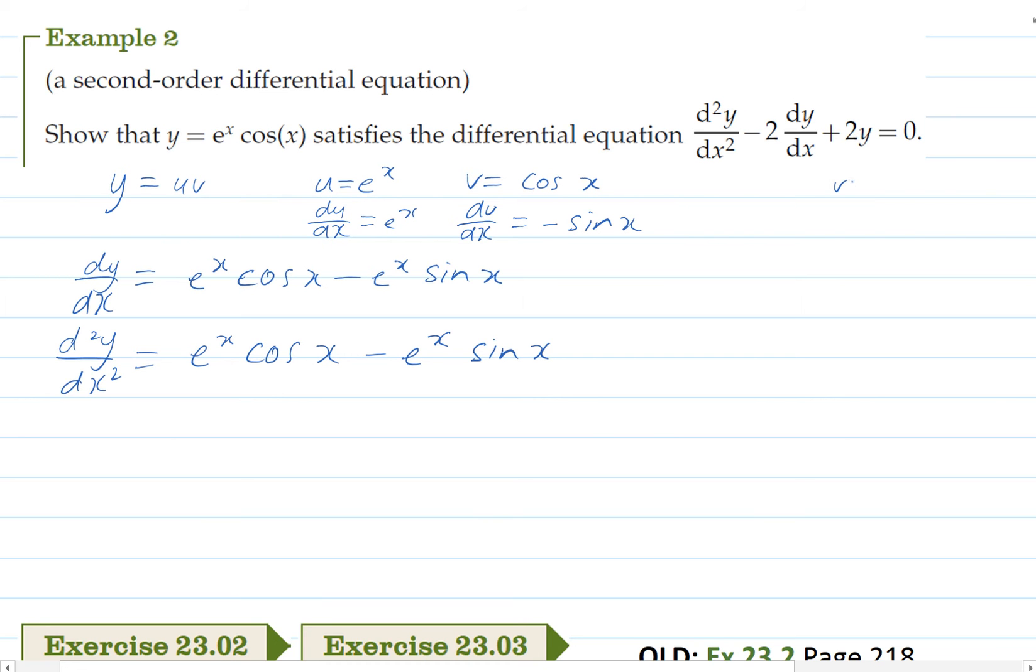And this part here is going to be very similar to this one except our v will be sin x and our dv/dx will be cos x. And so this part will differentiate to negative e to the x sin x and then positive,